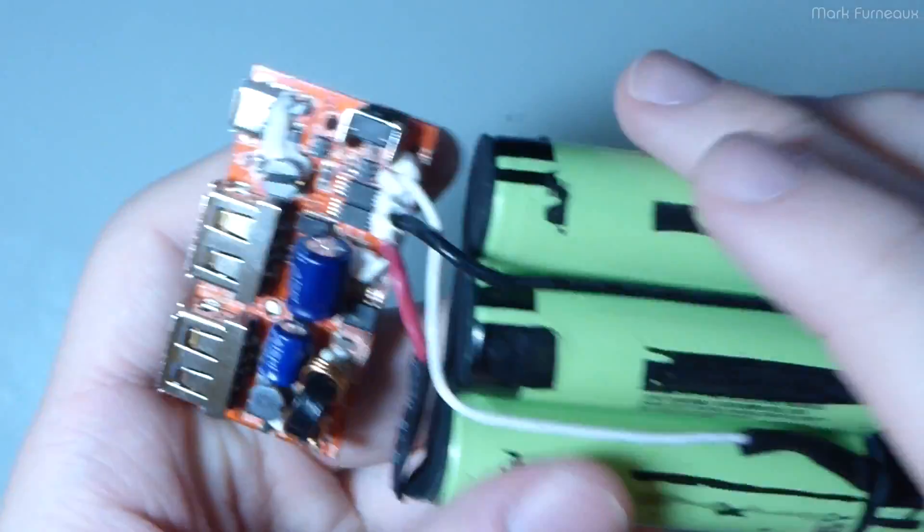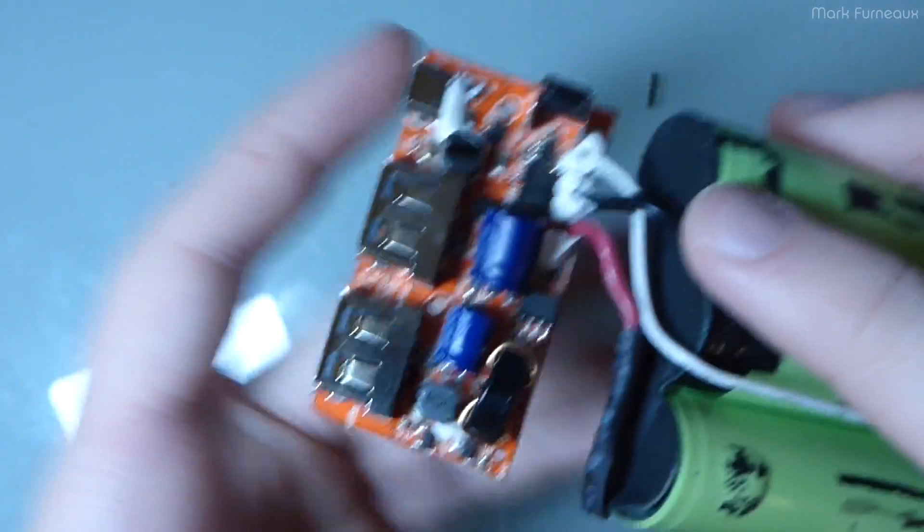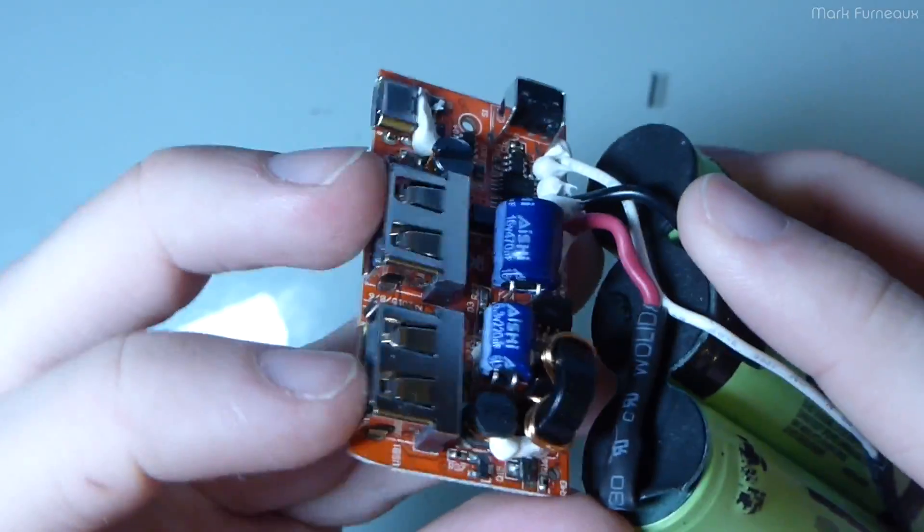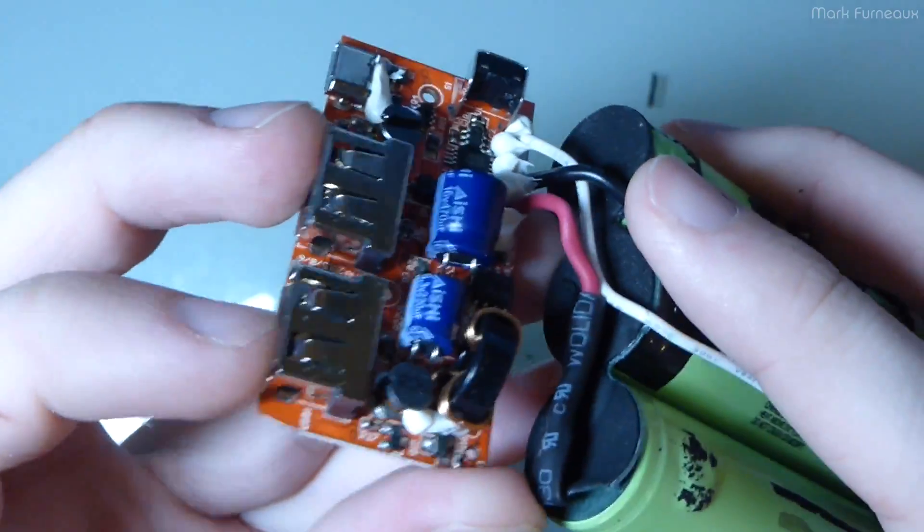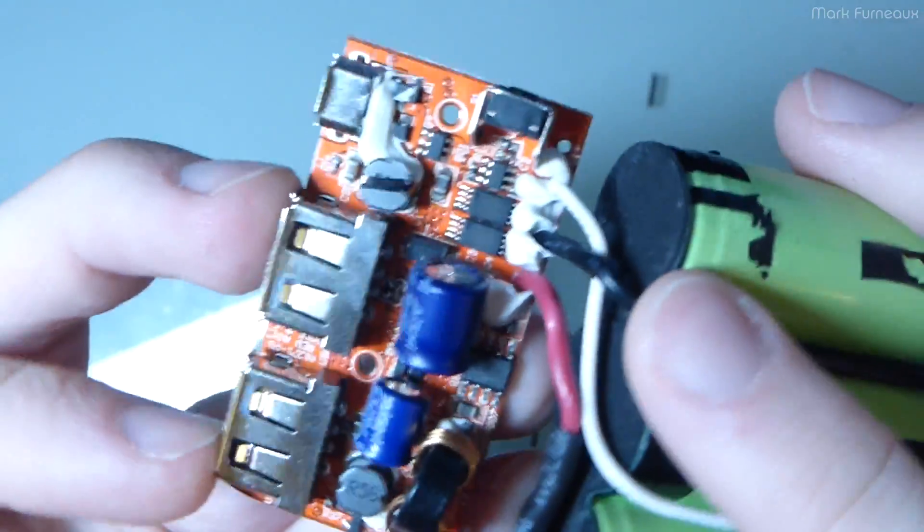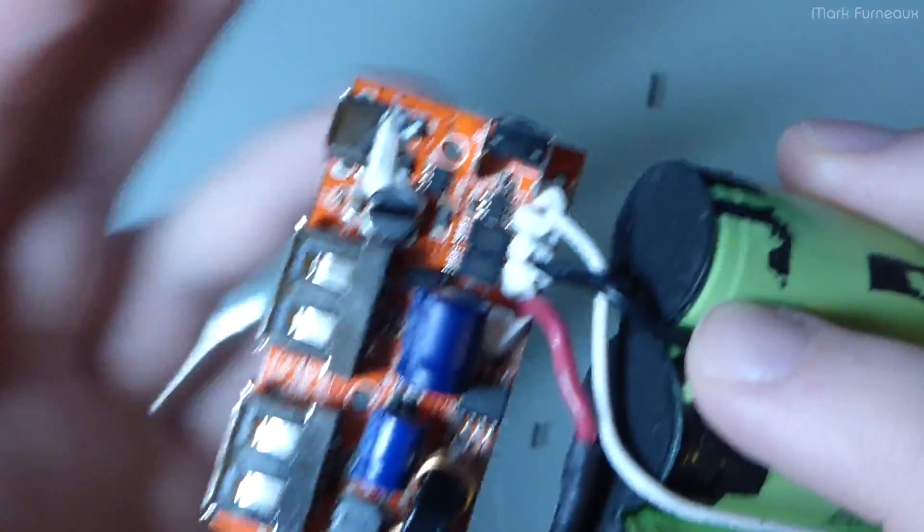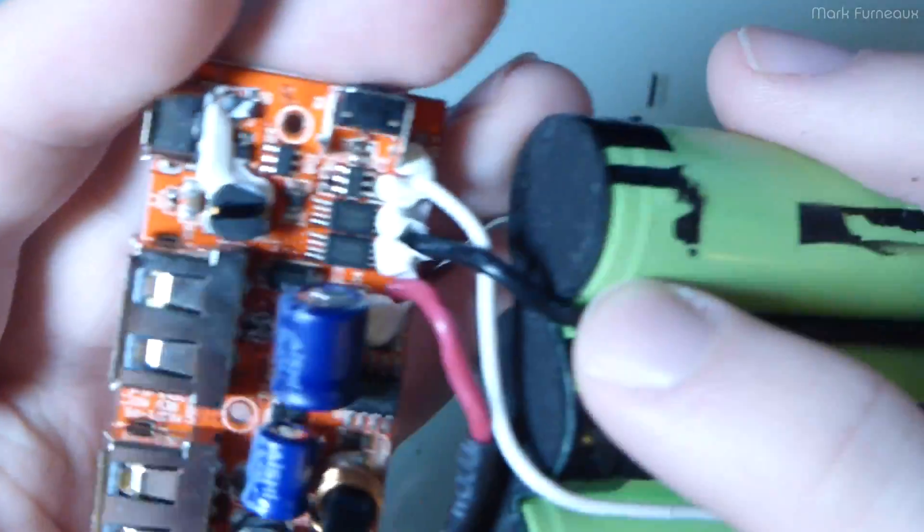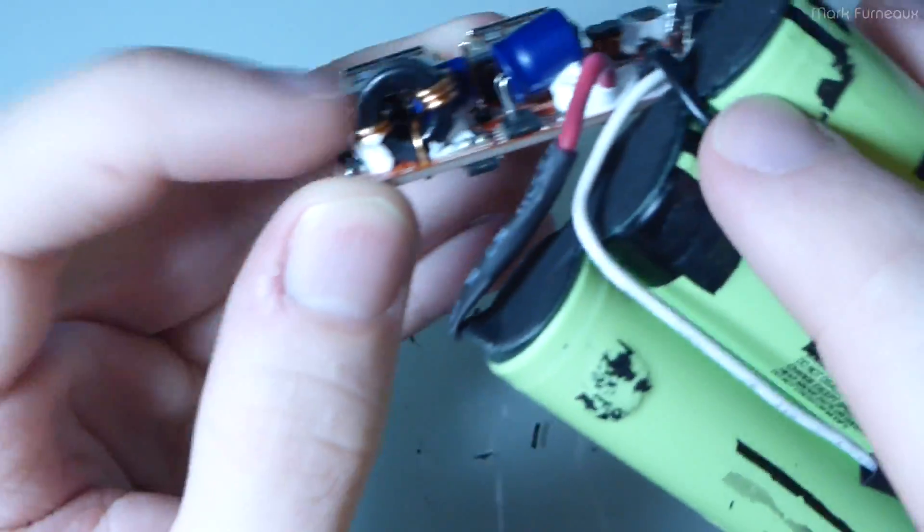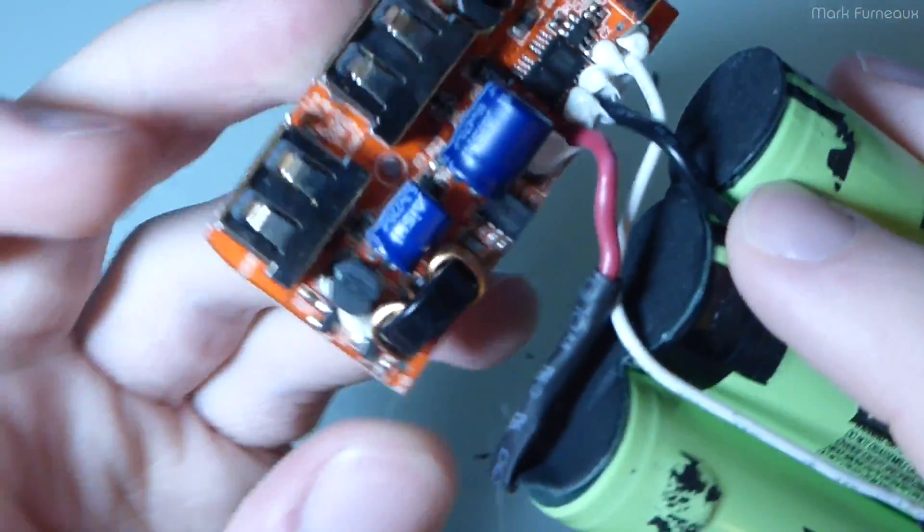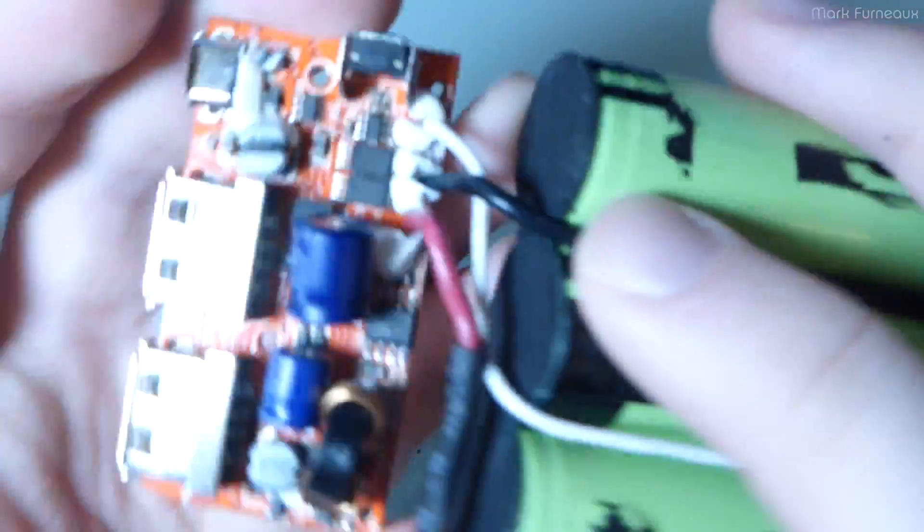This thing will charge at up to two amps, and it will discharge at up to 4.8 amps. So you can run two 2.4 amp loads on this simultaneously. And it does actually handle that very well. The voltage stays above five volts, it doesn't droop or anything like that. So it actually can do things quite commendably. And I believe it's probably due to the quite large inductor that they have here.